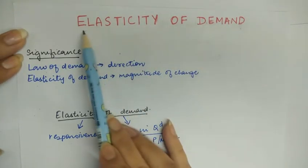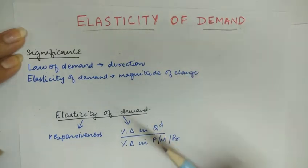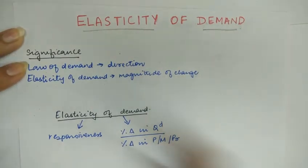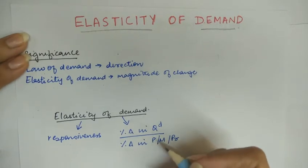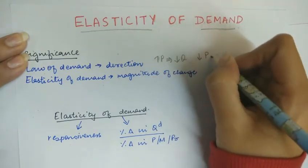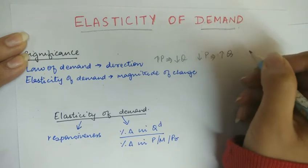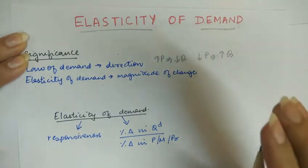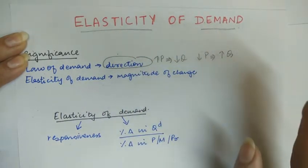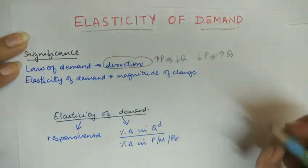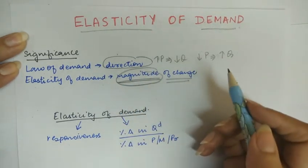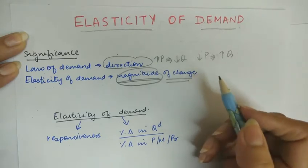In today's lecture we will cover elasticity of demand. First I will tell you the significance of elasticity of demand over the law of demand. As we already know, according to the law of demand, an increase in the price of a commodity will lead to contraction of demand and a decrease in price will lead to expansion of demand. The law of demand tells the tendency or direction of the change in demand due to a change in price, however it is silent on the magnitude of the change in quantity demanded.